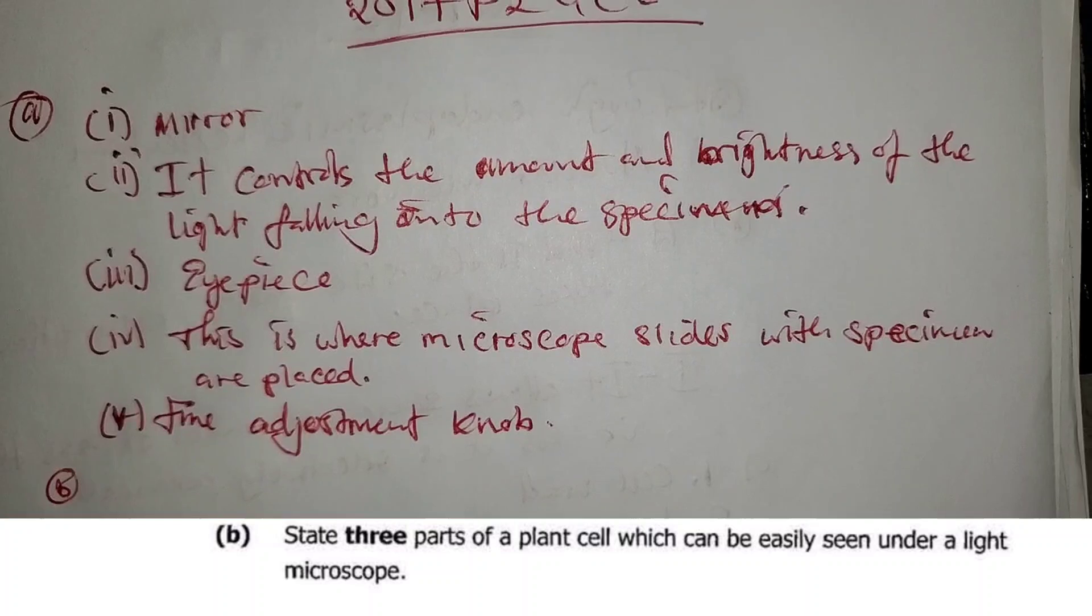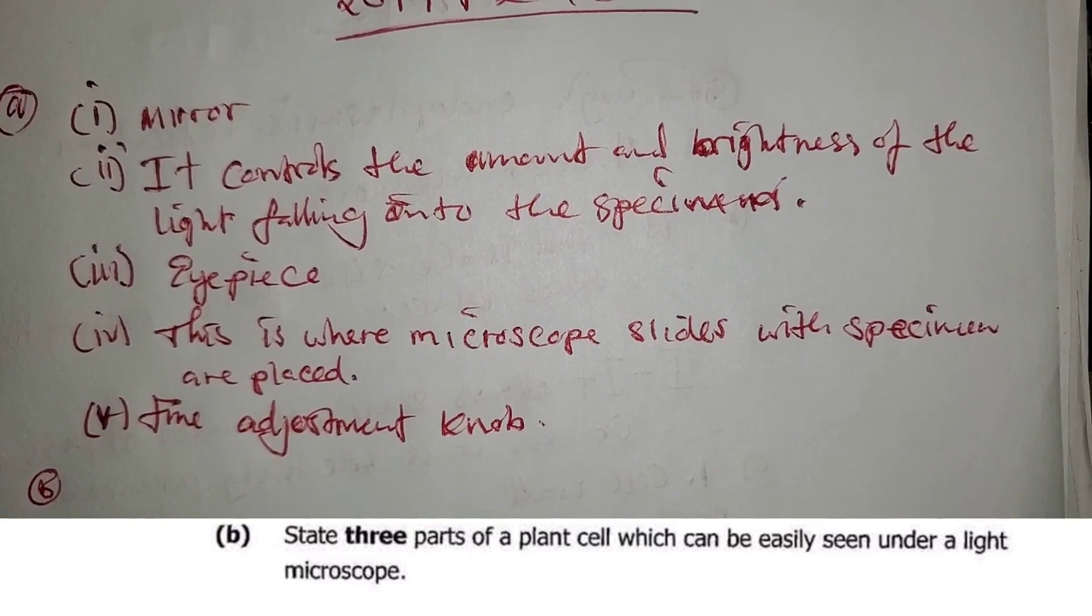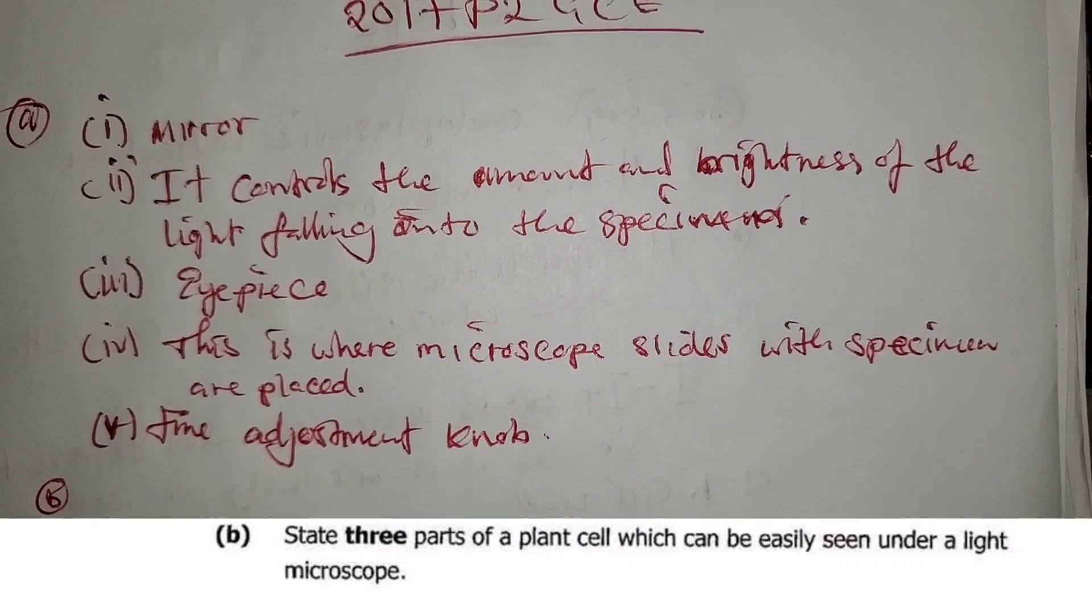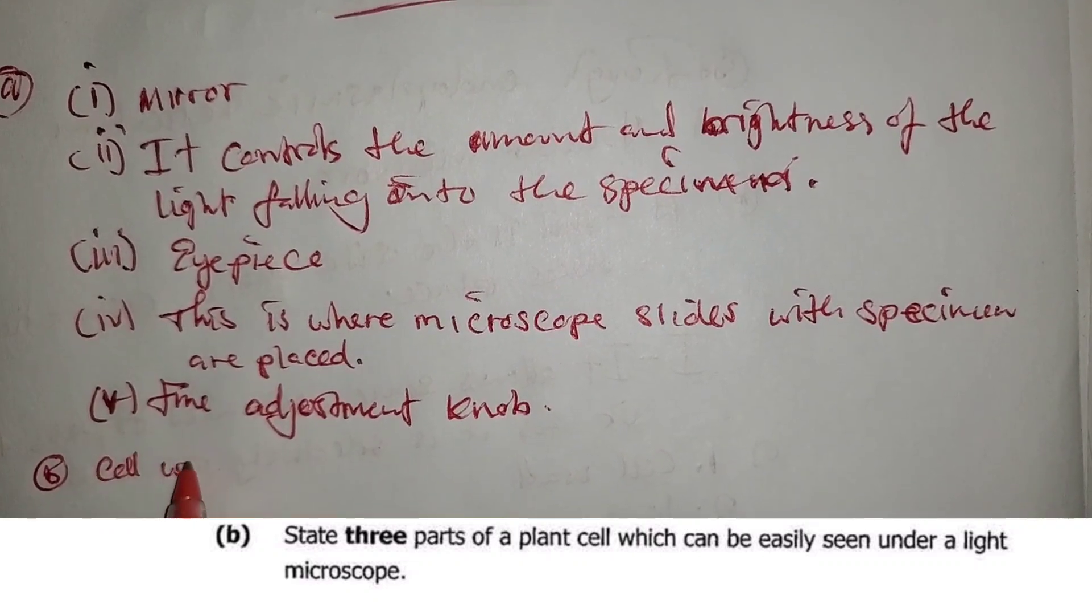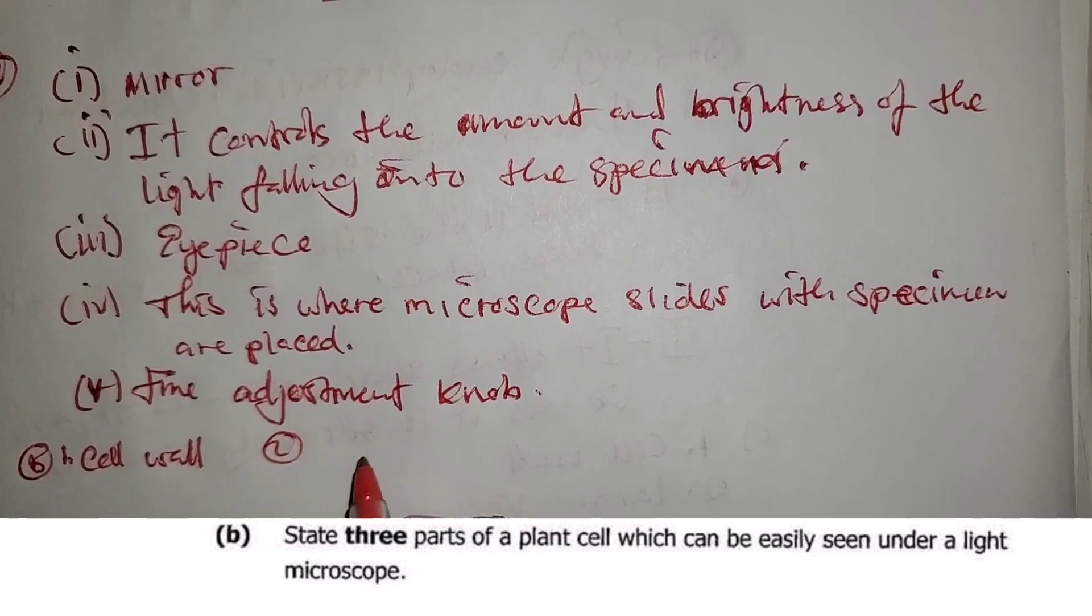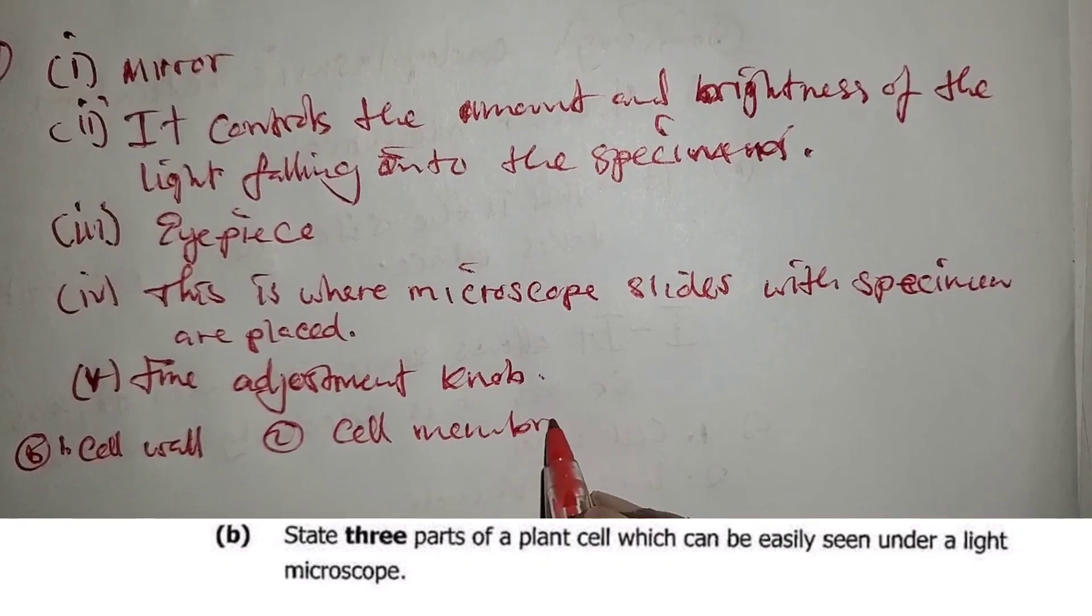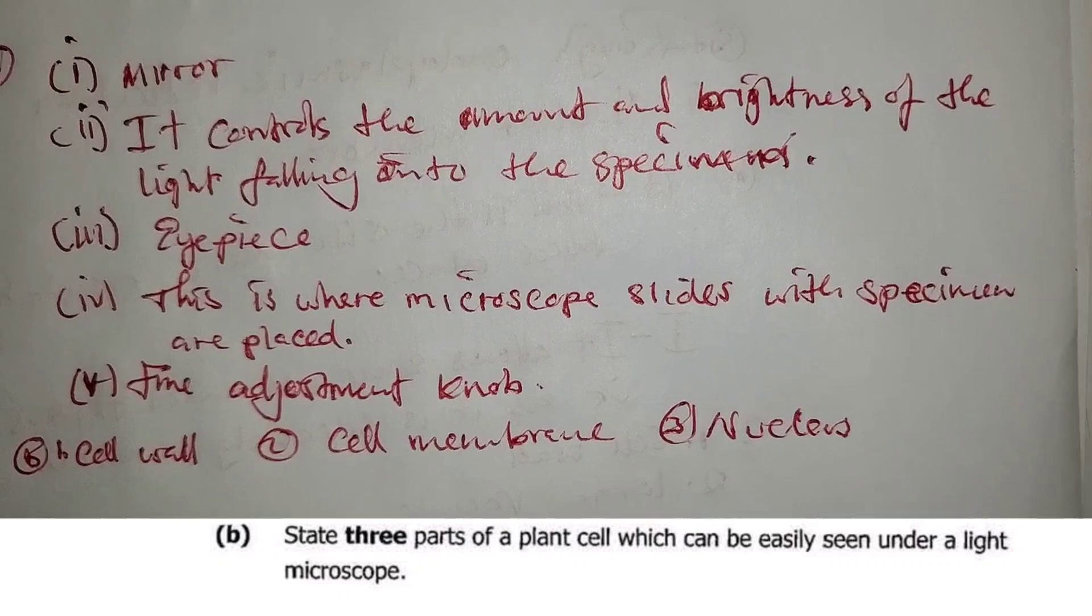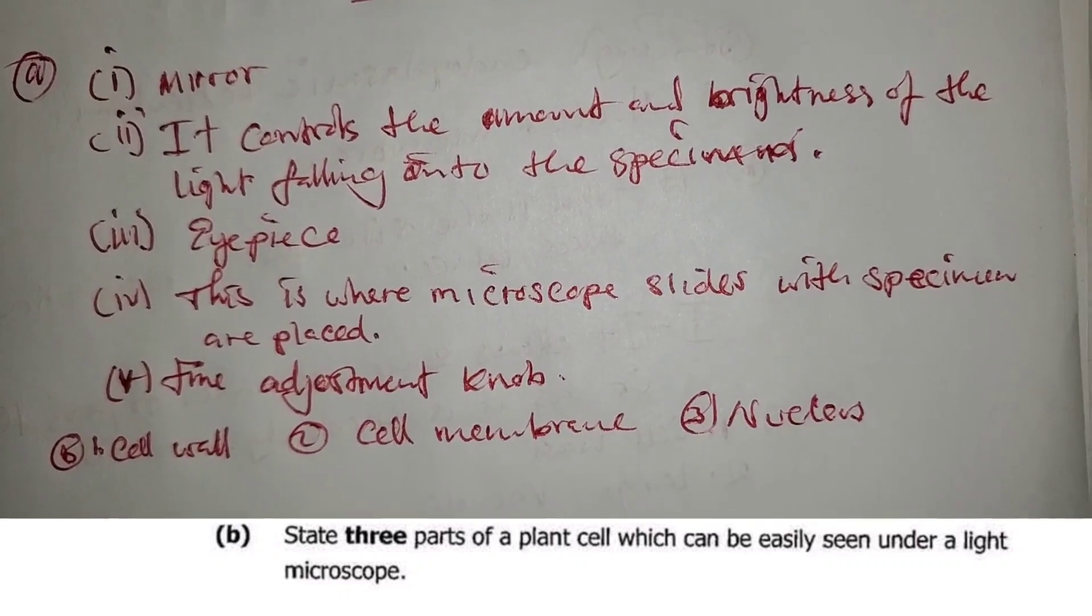Question B asks: state three parts of a plant cell which can be easily seen under a light microscope. The answers are: number 1, cell wall; number 2, cell membrane; number 3, nucleus.